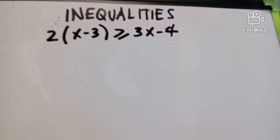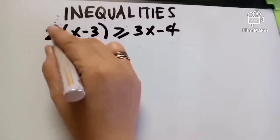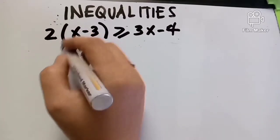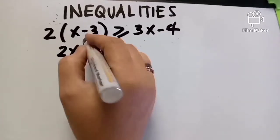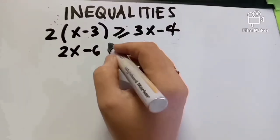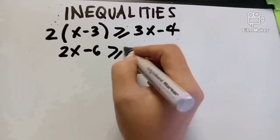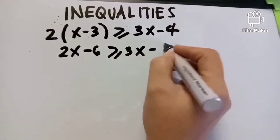First, we distribute. 2 times X gives 2X, and 2 times negative 3 gives negative 6. So the expression becomes 2X minus 6, greater than or equal to 3X minus 4.